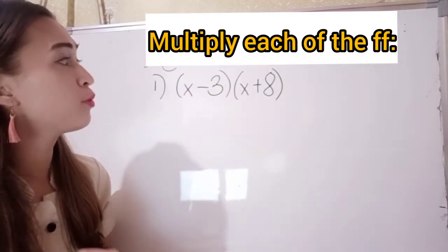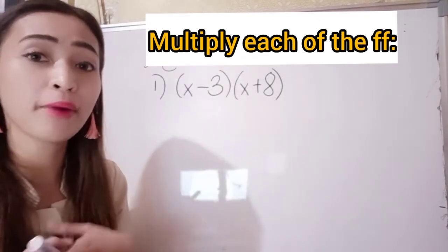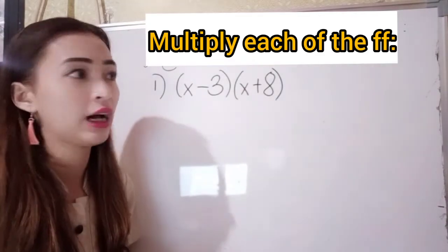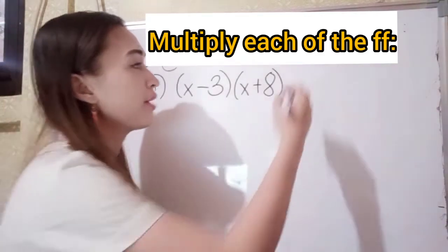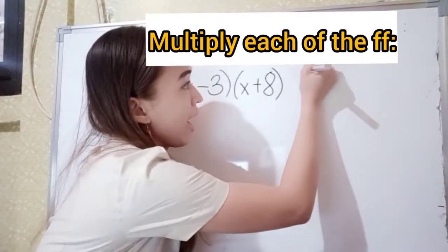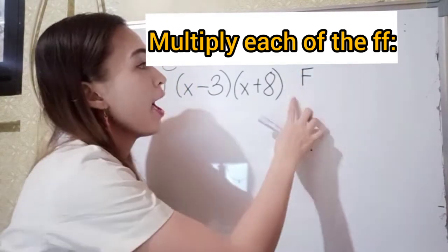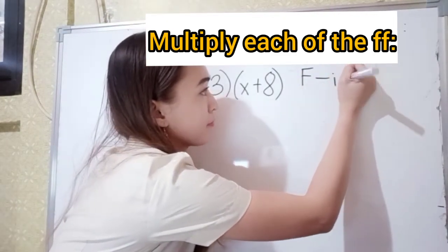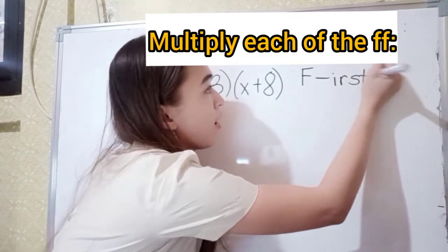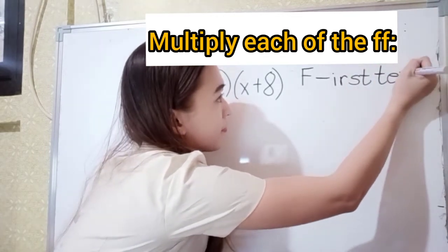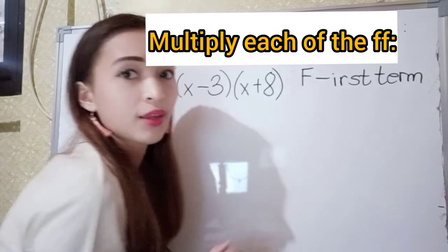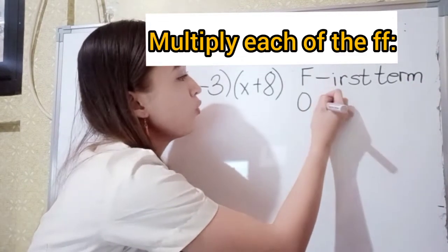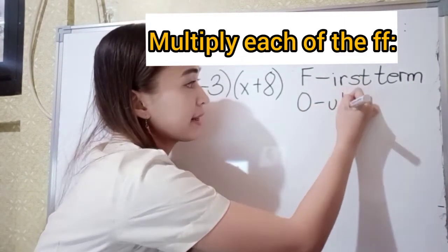To multiply binomial to a binomial, we're going to use the FOIL method. For the FOIL method, F means the first term, and O means outer term.